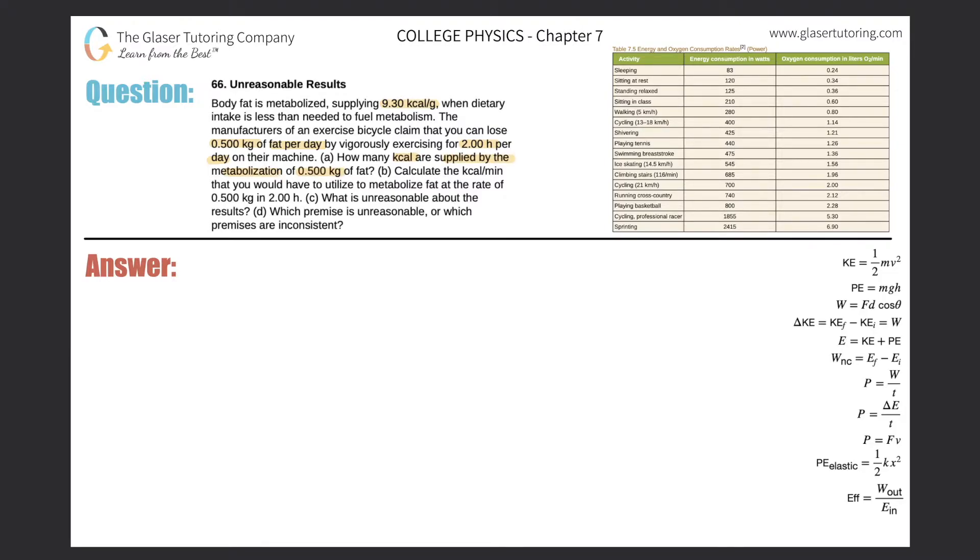All right, let's take a look at letter A. We can do a very simple dimensional analysis. We want to know how many kilocalories are supplied, so that's our answer: kilocalories. Our job is to set up these conversions and place the units right in these spots so that they cancel and leave me with just the unit of kilocalorie.